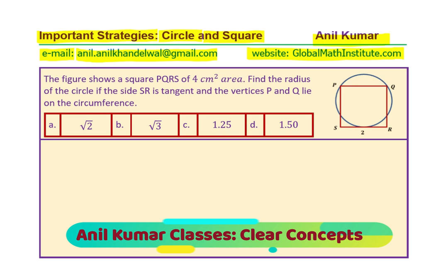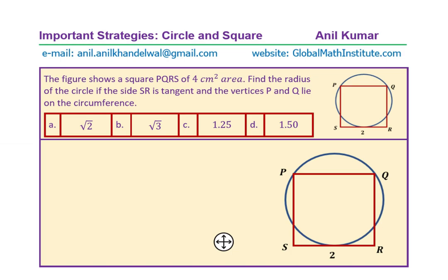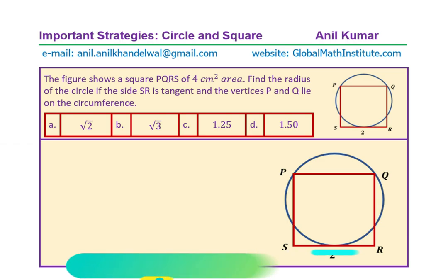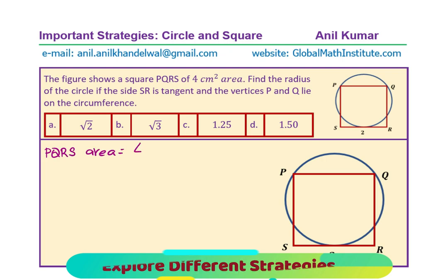Before we get into the solution, let us look into the approach — how do we solve such a question? Let me enlarge this diagram and work on it. Here is the enlarged version. We are given that the square PQRS has area 4 cm², and therefore the side length SR is equal to 2 cm.